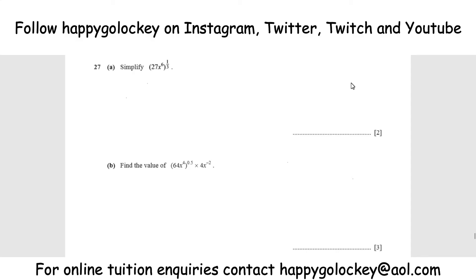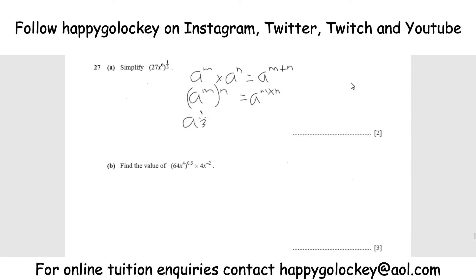Back with the worked solutions. I'm going to jot down some of the rules that are going to be important for answering these questions. The first one: if you've got a base to a power multiplied by the same base to another power, you just add the powers together. Also, if you've got a base to a power and outside the brackets you've got another power, that's the same as multiplying the powers inside and outside. And anything to the power of a third is equivalent to cube rooting that number.